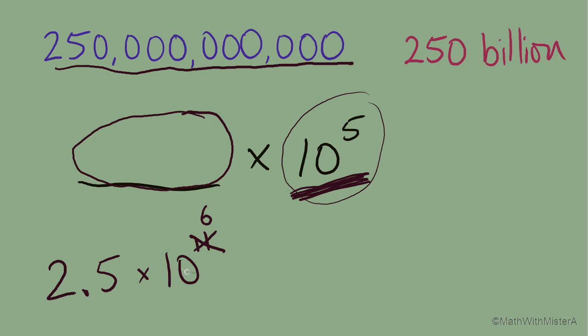So what is 2.5 times 10 to the sixth? 2.5 and now 10 to the sixth. So we're going to multiply by 10 six times. The first one is over this 5 to make 2.5 into 25. So that's 1, 2, 3, 4, 5, 6.